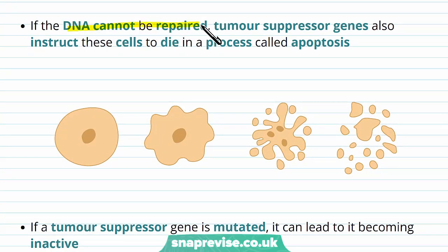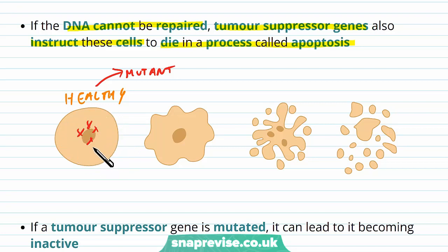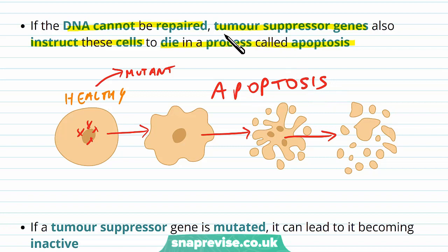If we're unable to repair the DNA, the tumour suppressor genes also instruct these cells to die in a process called apoptosis. Say a healthy cell has undergone a mutation in its DNA and we're unable to repair it — it's beyond repair. It's better for the cell to undergo cell suicide rather than divide and pass these errors on. This process of apoptosis is triggered by the tumour suppressor genes, and at the end of apoptosis the cell is completely destroyed.